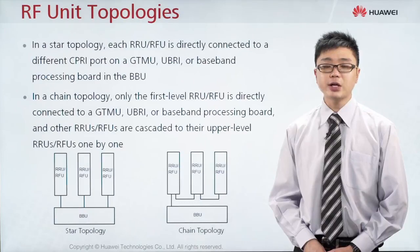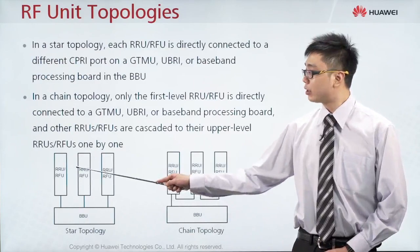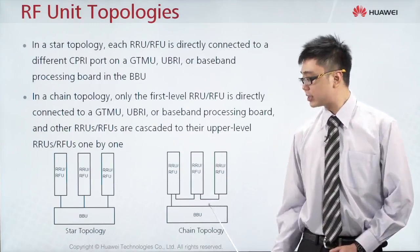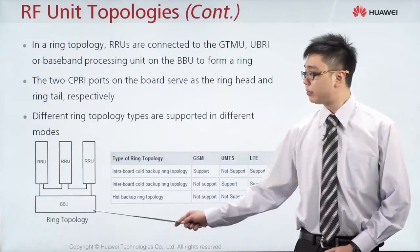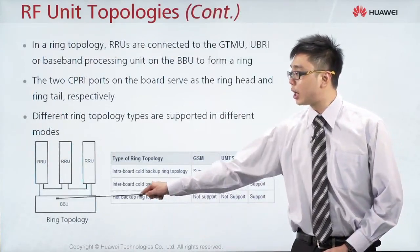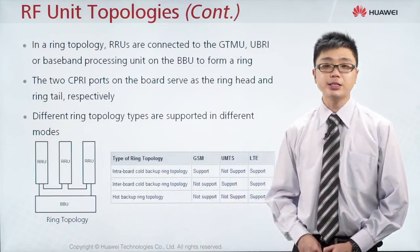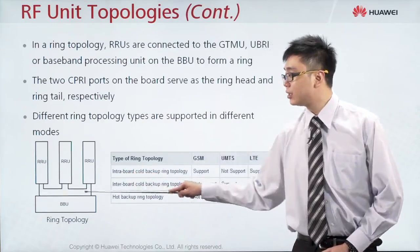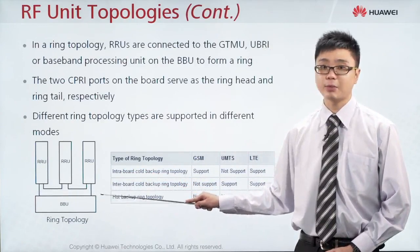The next part covers RF unit topology — how the RF is connected directly to the BBU. The RF can connect to the BBU using star topology or chain topology. There is also a ring topology where the RRU is connected in a circle and back to the same BBP board, providing an auto backup function. If one connection is disconnected, there is still another for backup. However, not many operators use this type of connection.